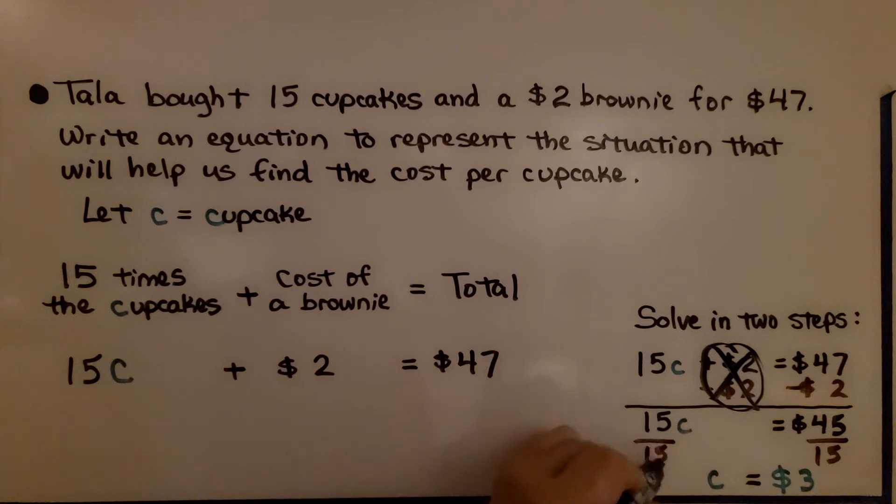We divide both sides by this coefficient 15. And on this side we get the same numerator and denominator. So that whole thing equals 1 or 1C and we don't write the 1. And here we have $45 divided by 15. That tells us each cupcake costs $3.